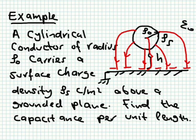Let's now consider the case of a cylindrical conductor — a wire. It's an infinite wire coming out of the page; I'm just showing you the cross section. It carries a surface charge density of ρ_S coulombs per meter squared. There is a surface charge density, and the wire is close to a ground plane. The distance from the center of this conductor to the ground plane is H.